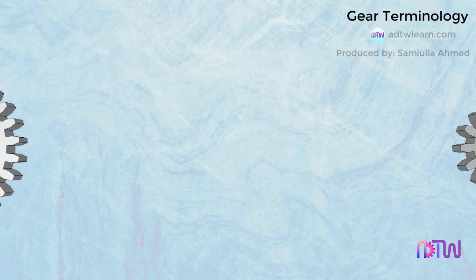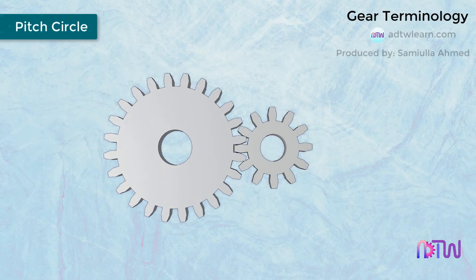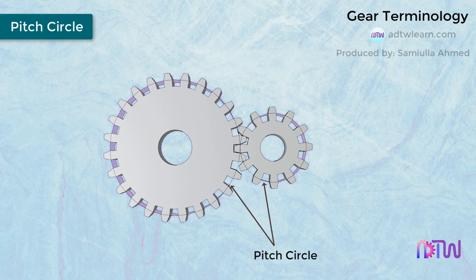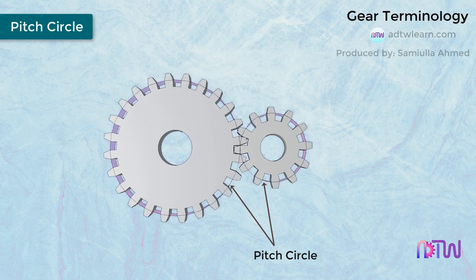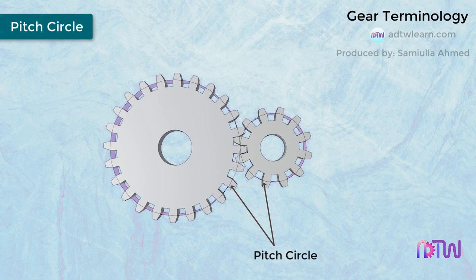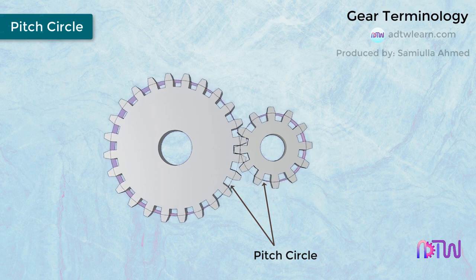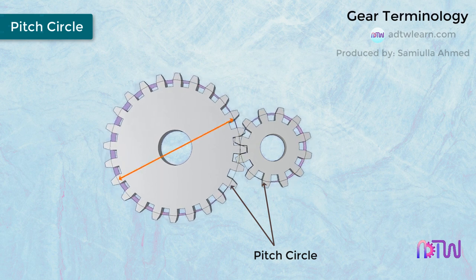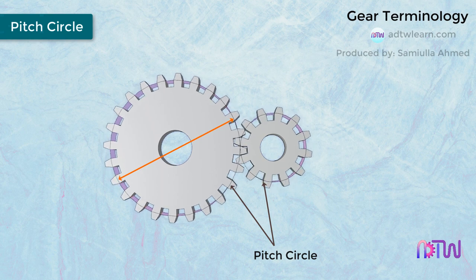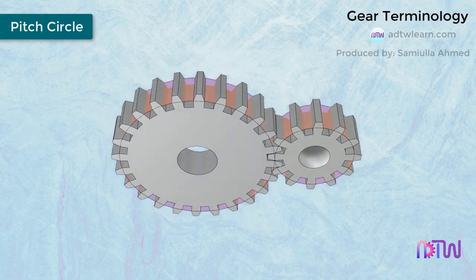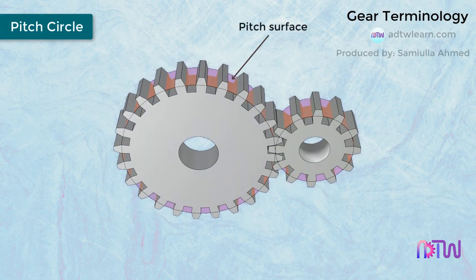Pitch Circle. A pitch circle is an imaginary circle which, by pure rolling action, will give the same rotation as an actual gear. The motion of the two meshing gears is described by their pitch circles' motion. The diameter of this pitch circle is called the pitch circle diameter. This surface of the disc is called the pitch surface.